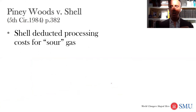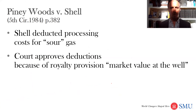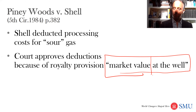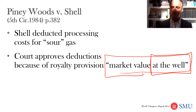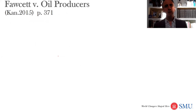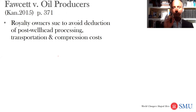A couple of complications. In the Piney Woods versus Shell case, Shell deducted processing costs for sour gas — gas that has impurities, often sulfur in it. The court said you can take deductions because the royalty provision says 'market value at the well.' 'At the well' means that we net back to find that well value, so you take deductions to get to that price.